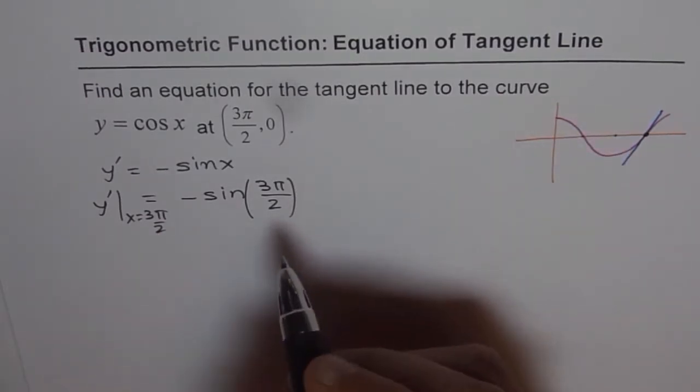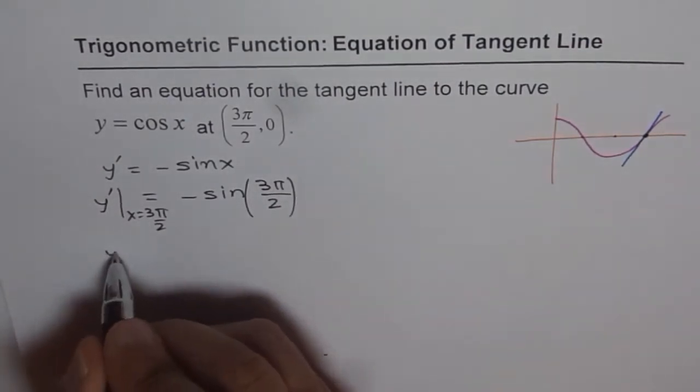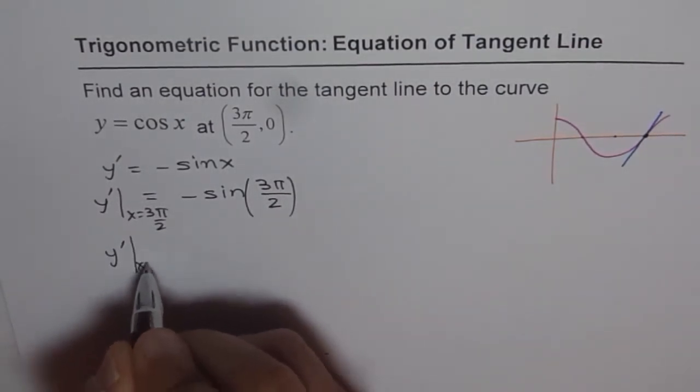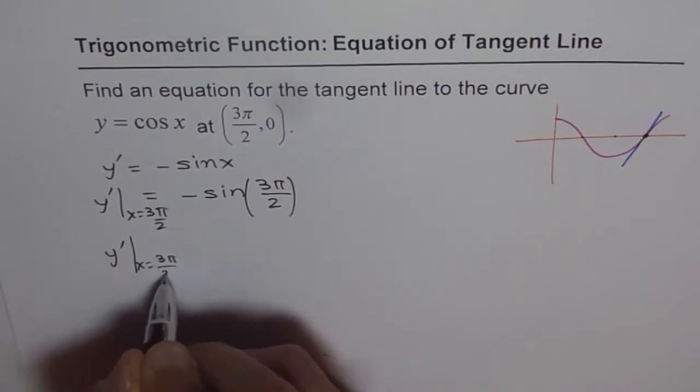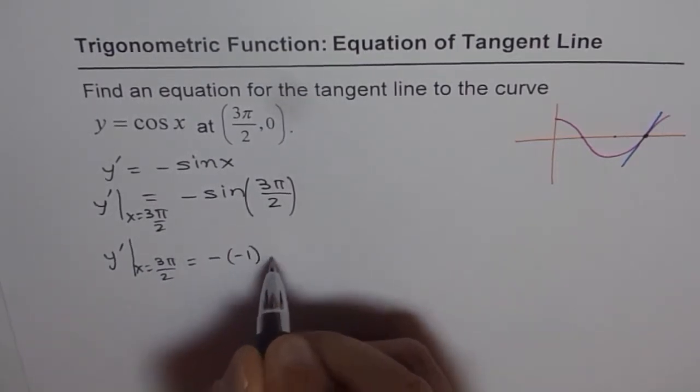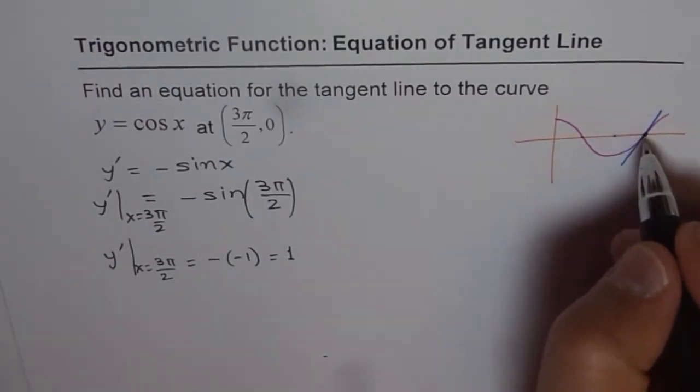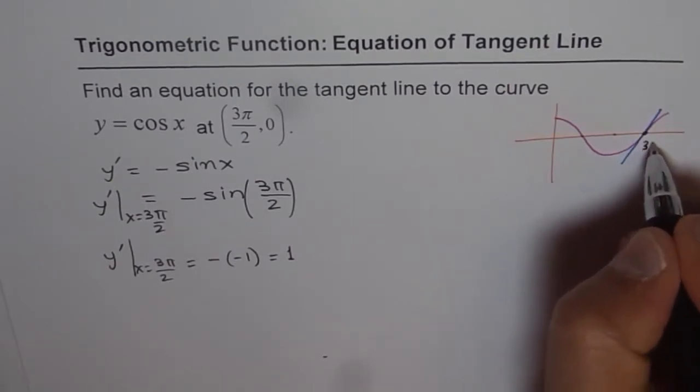So we get y dash at x equals 3π/2 equals minus of minus 1, and that is 1. So we have a slope of 1 at this particular point, which is 3π/2 for us.